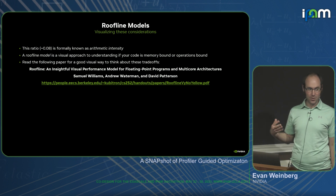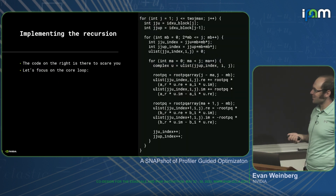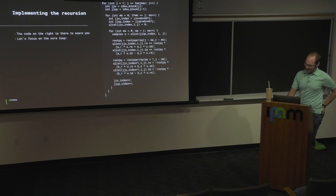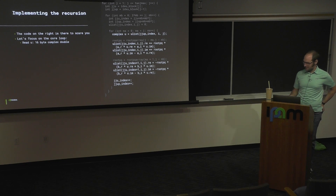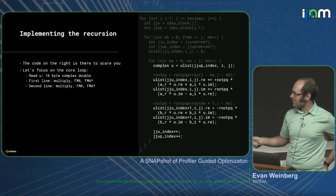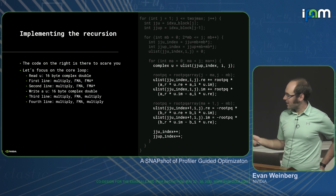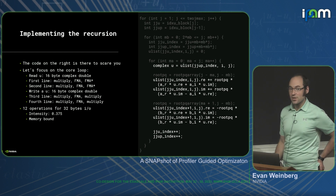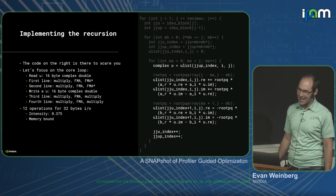Back to code. Let's think about the arithmetic intensity of the SNAP kernel. We do some kindergarten counting: read a complex double value U — 16 bytes. Do some multiplications and additions. Counting it out, there's a multiply, a fuse multiply-add, and a fuse multiply-add times two — six operations. It's a plus-equals, so we're writing 16 bytes. We do the same thing again below. So we're doing 12 operations for 32 bytes — an arithmetic intensity of 0.375. On any architecture today, that's probably going to be memory bound.